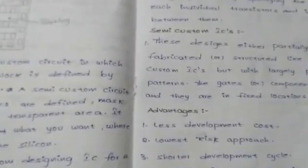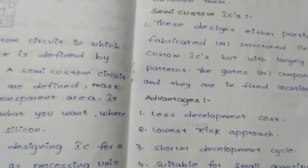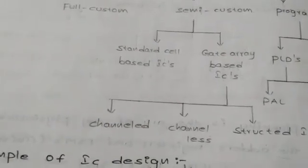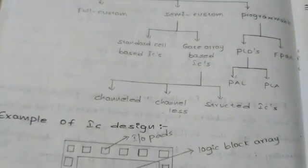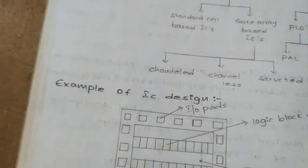Semi-custom ICs are partially or fully pre-fabricated or structured like standard designs, but with largely pre-designed mask patterns. Semi-custom ICs are mainly divided into two types: standard cell based ICs and gate array based ICs. In semi-custom circuits, only a few masks are user-defined. A mask is an arrangement of transparent areas containing the design pattern used to expose the silicon.